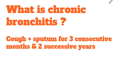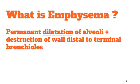In COPD, the teacher often asks: what diseases are included in COPD? The answer would be chronic bronchitis and emphysema. Chronic bronchitis is when the patient is having cough with sputum for almost every day for 3 consecutive months for 2 successive years. Emphysema is permanent dilatation of alveoli and destruction of the walls of the alveoli distal to the terminal bronchioles, meaning the walls of the alveoli are permanently destroyed, reducing the lung's surface area and causing air trapping, leading to breathlessness.